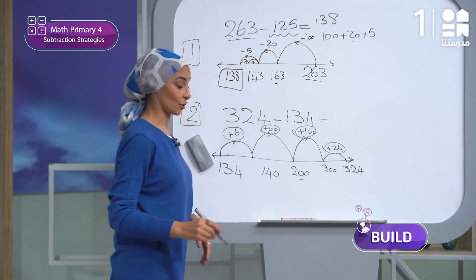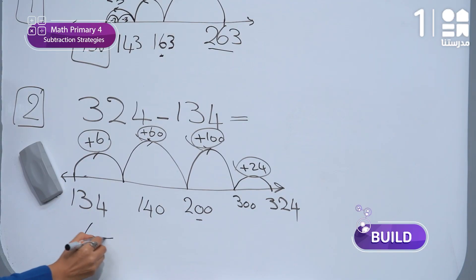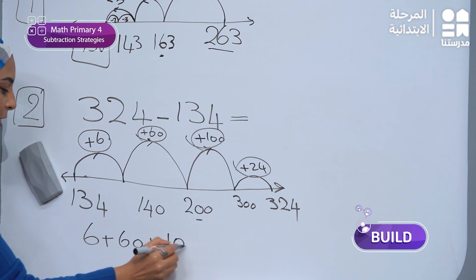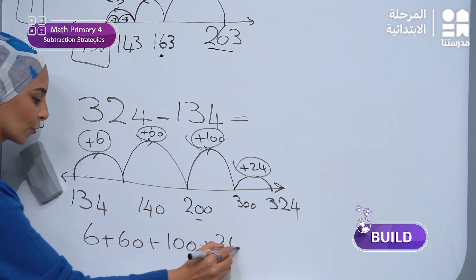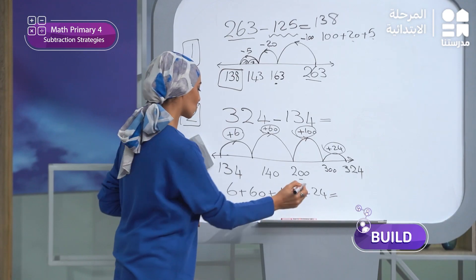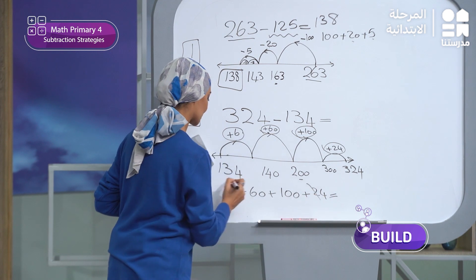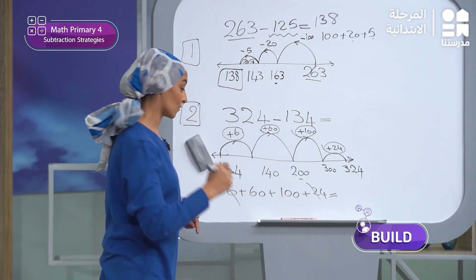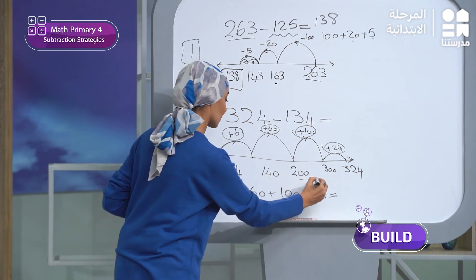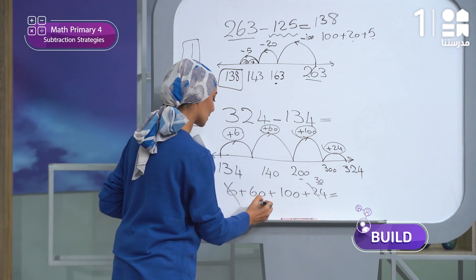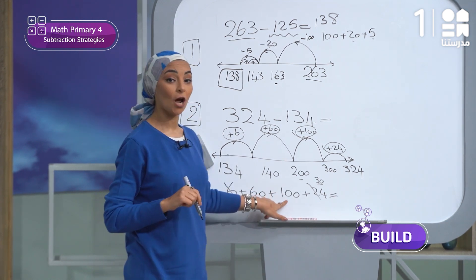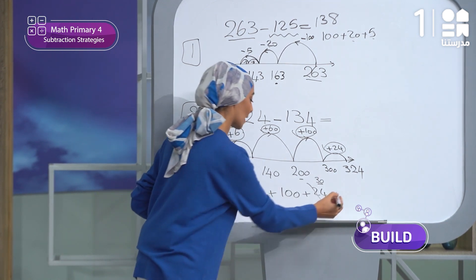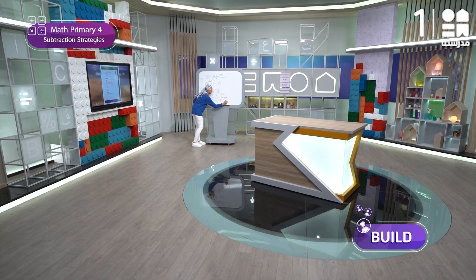Now I will add all these numbers to get the right answer: 6 plus 60 plus 100 plus 24. Let's do it: 24 plus 6 gives me 30, then 30 plus 60 equals 90, plus 100 — the answer is 190. This is the final answer.